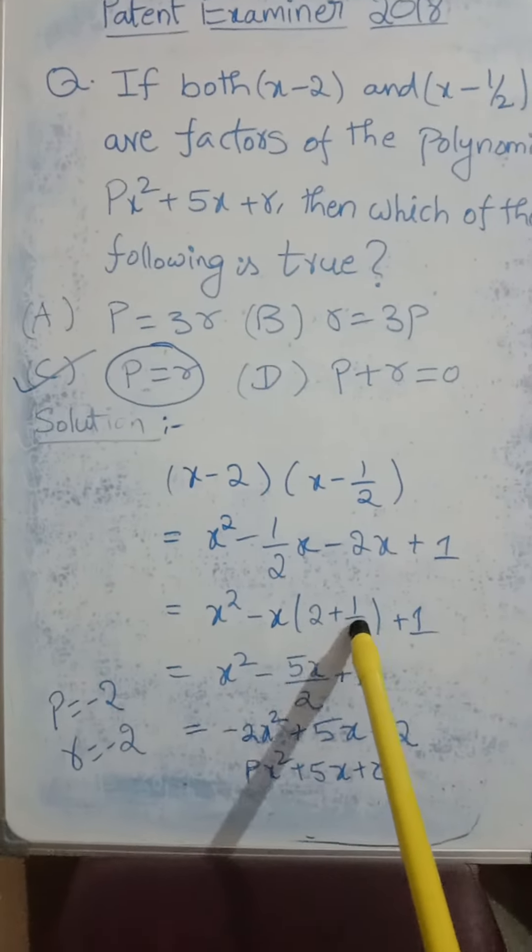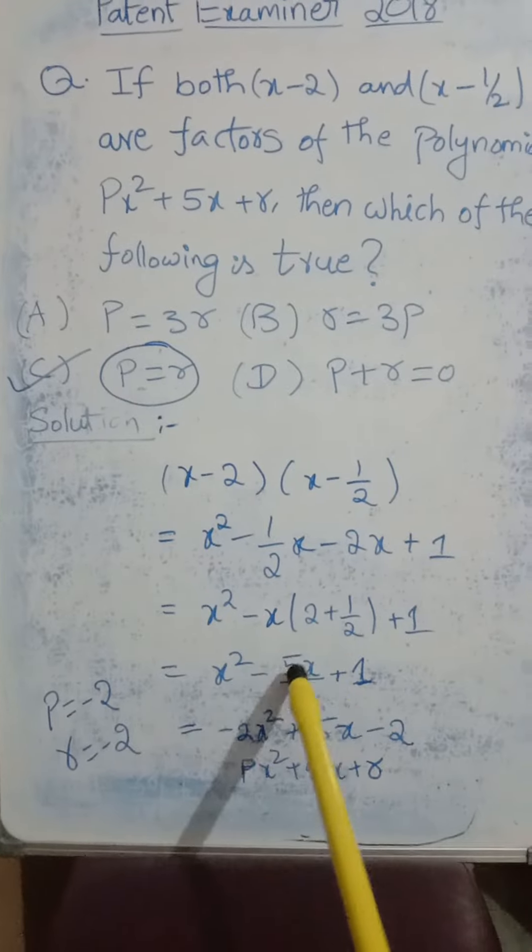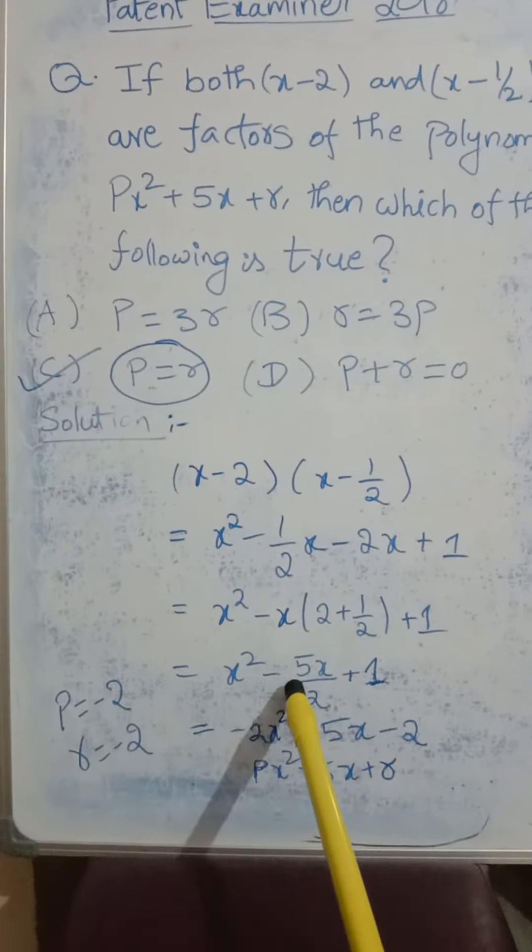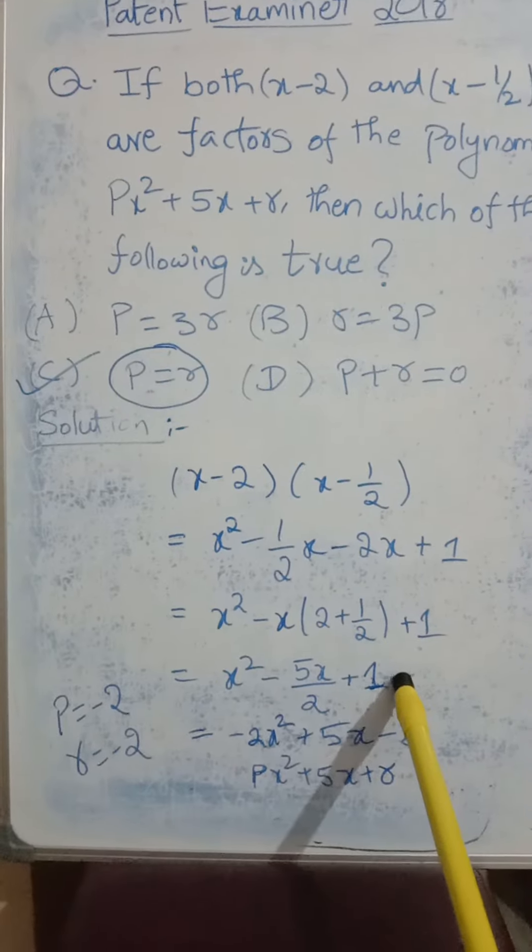If I add minus 2 plus minus half I will get minus 5 by 2. So the equation is x square minus 5x by 2 plus 1.